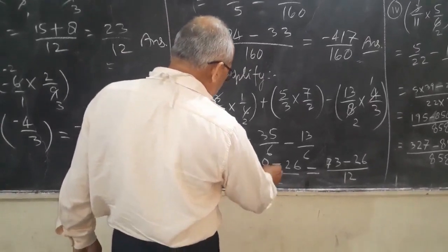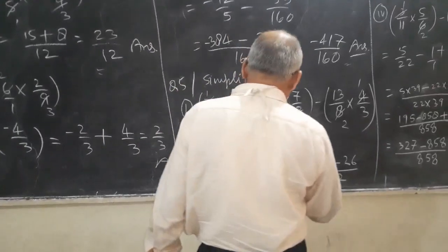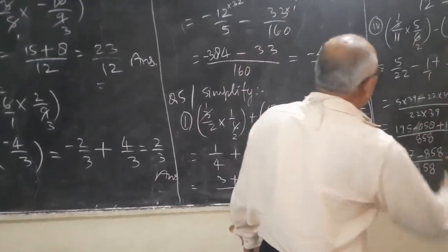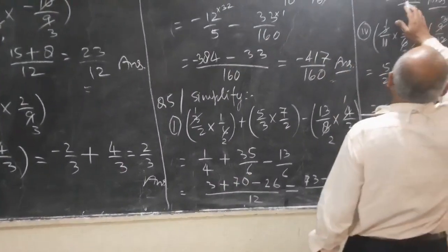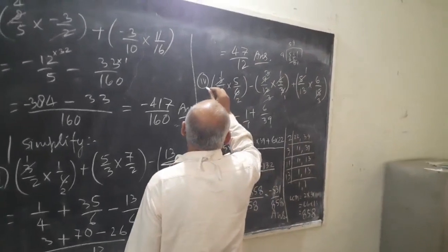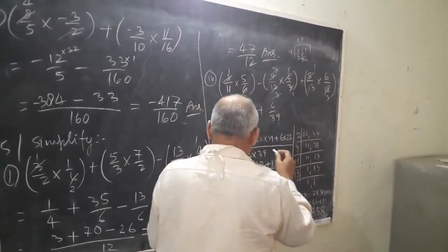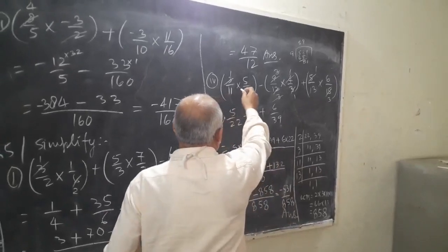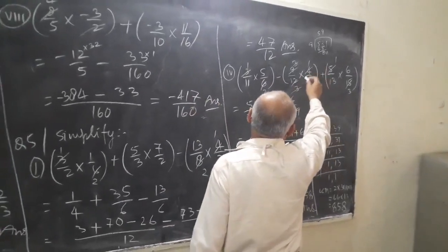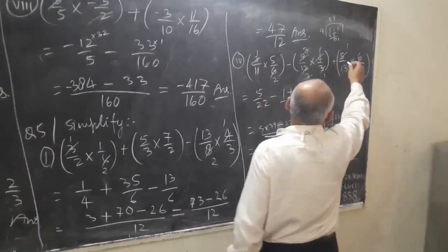It is the correct answer. Now question number 4, part 3 upon 11 — it will be equal to 47 upon 12. It is the correct answer. In bracket: 9 upon 12 into 4 upon 3, plus 5 upon 13 into 6 upon 15.